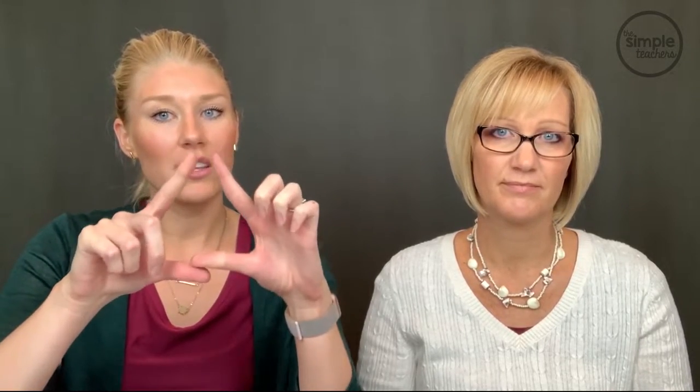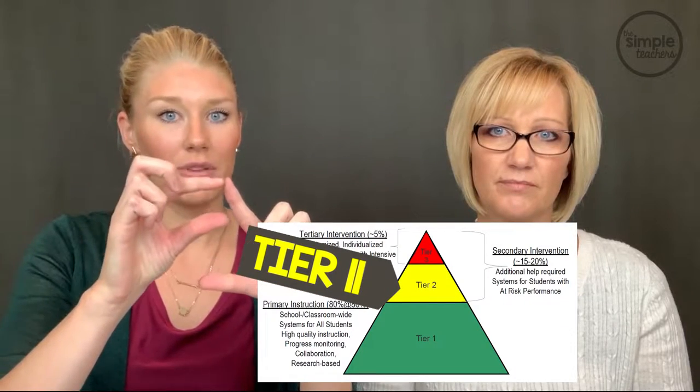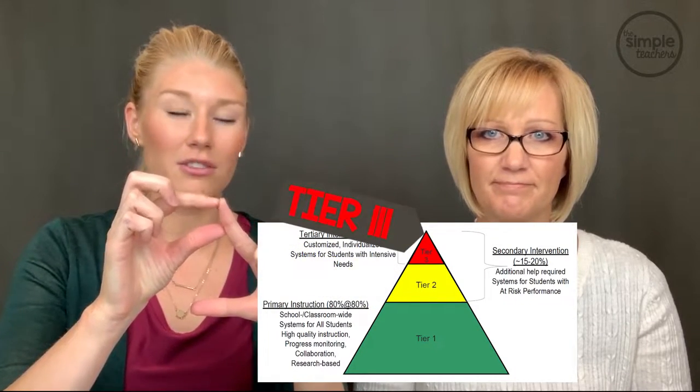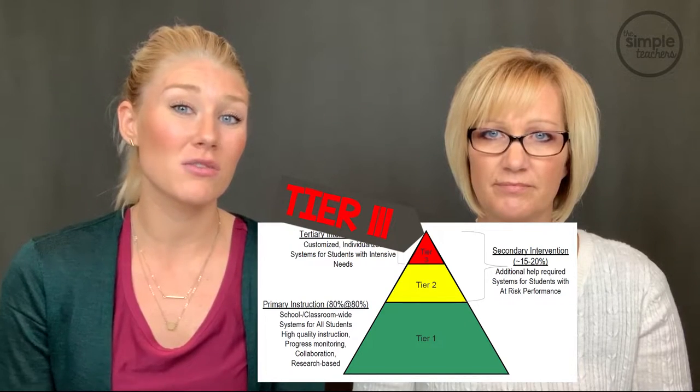Students who need a second dose need Tier 2 instruction, and that's where we're going to focus in this video. Tier 2 instruction makes sure those students who need re-teaching don't get left behind. Then the top part of the triangle is Tier 2, but there's also Tier 3 — a small amount of students, 3% to 5%, who need additional intervention to fill in a gap and become proficient.